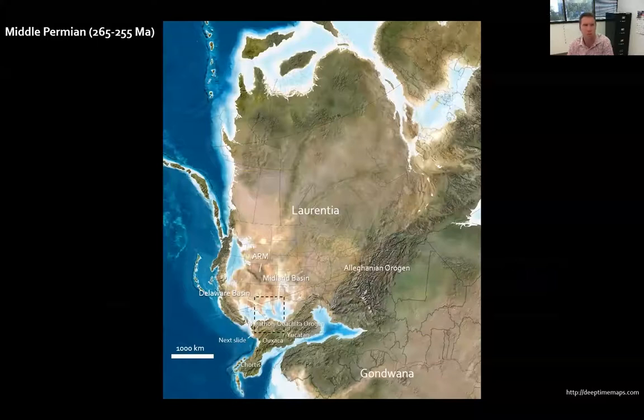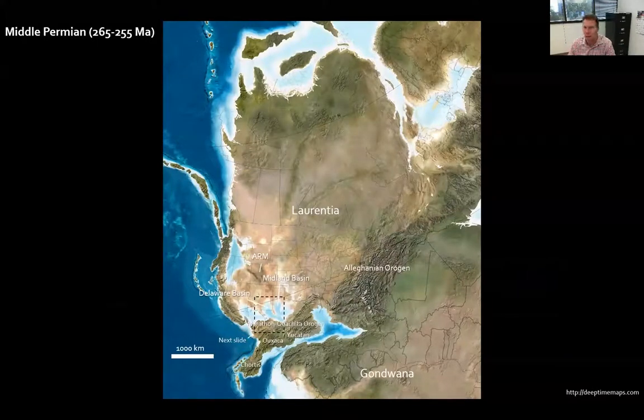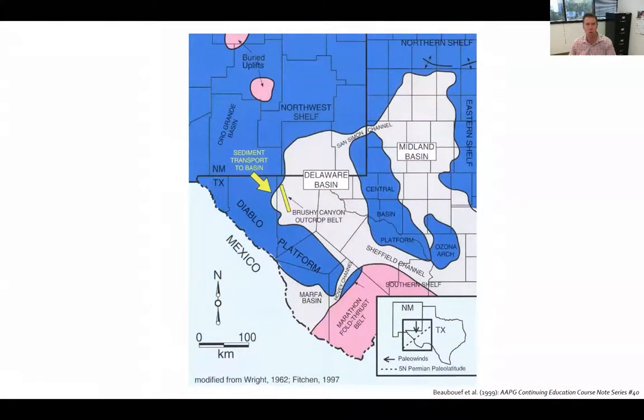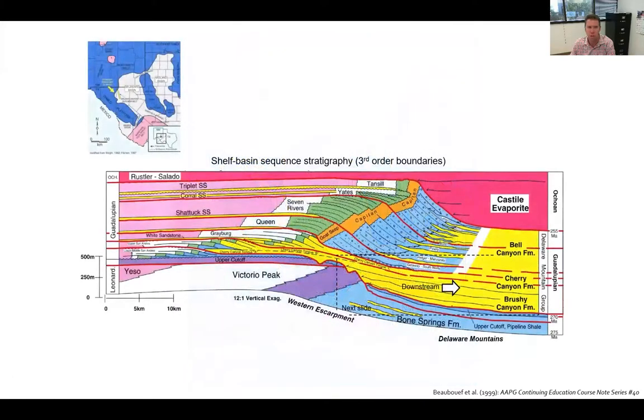Here's a paleogeographic map of Pangaea during the Middle Permian by Ron Blakey. I've highlighted the Permian Basin in a black dashed box. Zooming into the Permian Basin, here's a map by some ExxonMobil researchers who studied the Brushy Canyon formation outcrops in the Delaware mountains as analogs of other basin floor turbidite reservoirs. Here's a stratigraphic diagram of the units of the northern Delaware Basin, including upstream carbonate units that transition downstream to the clastics of the Delaware mountain group, which includes the Brushy Canyon formation at its base, and then it's overlain by the Cherry and the Bell Canyon formations.